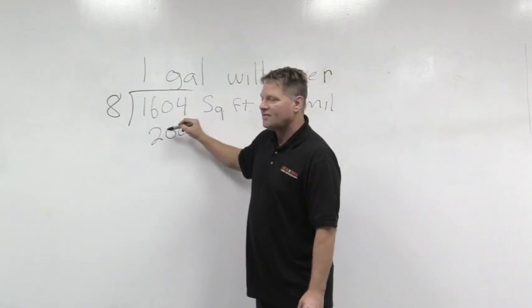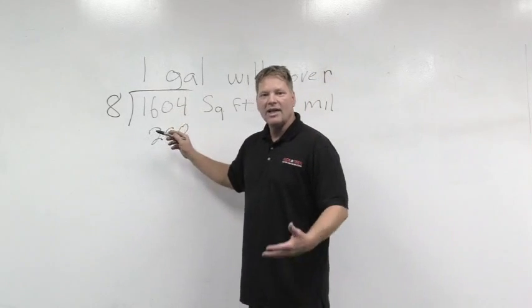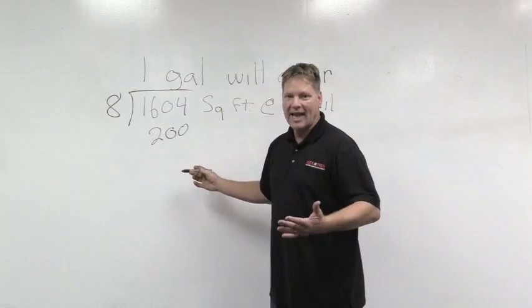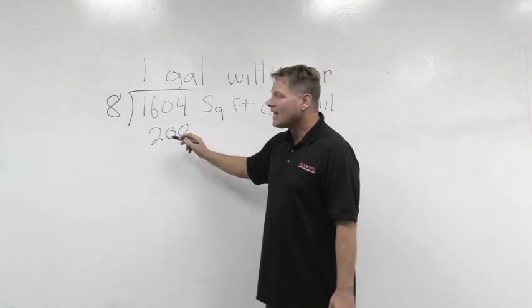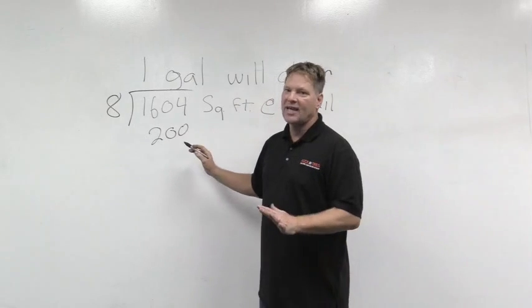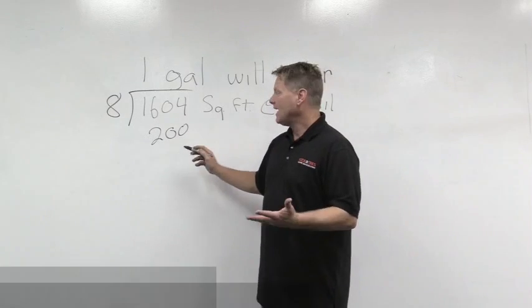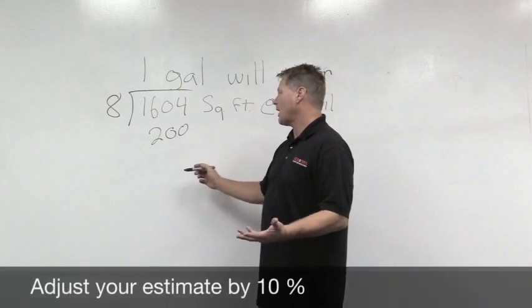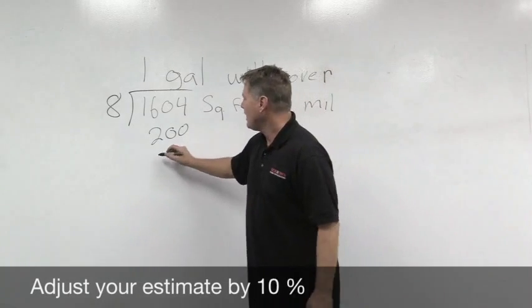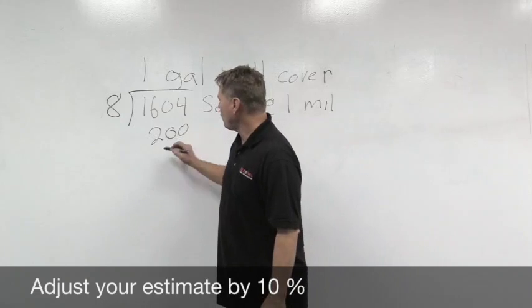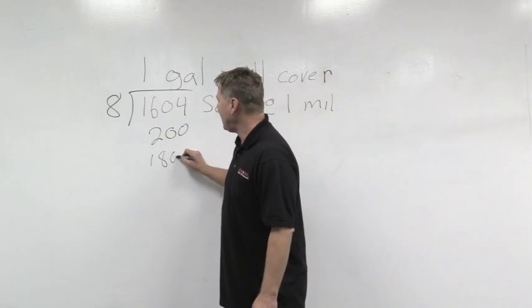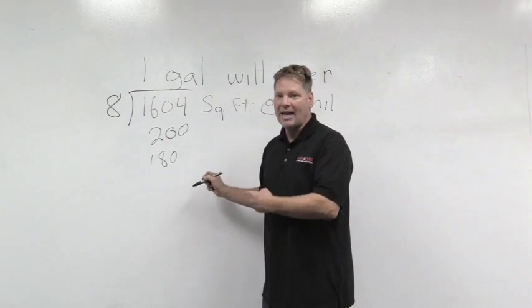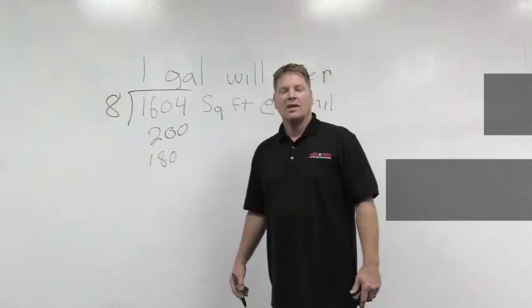Now this is theoretical — it doesn't take into account what's left in the can. So I like to throw in another 10%. I'm going to take out 20 square feet, so I'm going to figure 180 square feet per gallon in my estimate.